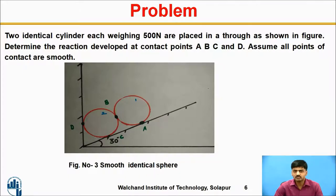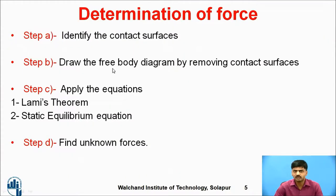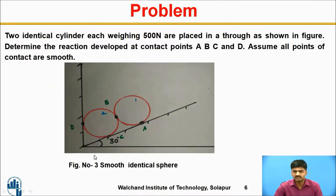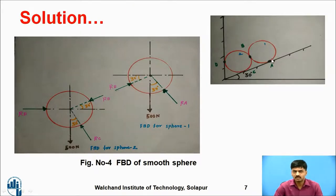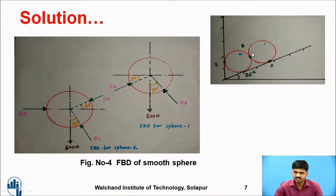According to our steps, we identify the contact surfaces and draw the free body diagram by removing them, then apply the equations to find the unknown forces. For sphere number one, removing the two contact surfaces and the base contact, we mention the reactions — always directed perpendicular towards the surfaces. This gives us the free body diagram for sphere one and sphere two.